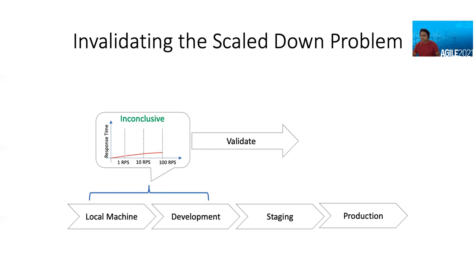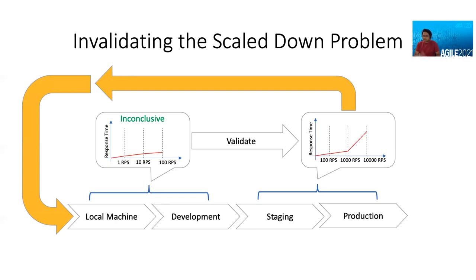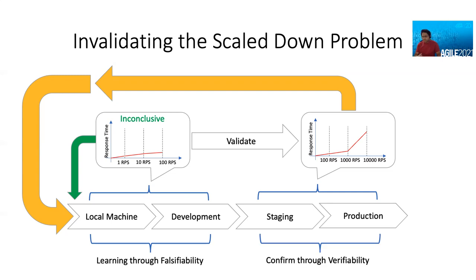It's inconclusive, so I need to validate it. And I do that in the higher environment. And I realize it actually holds good for some time, but then thereafter, it seems to fall off. So for that scenario, I can always come back. But this is not all bad. I did identify some of the issues on the left. And then only for the absolutely unconfirmable issues, I had to go to the right. And that's your shift left through invalidation. One more aspect to this whole picture here is you're learning through falsifiability on the left hand side, you're understanding better about the solution that you came up with.